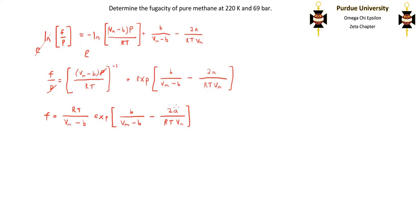a and b are constants of the Van der Waals equation of state given by the following expressions. We can look up the values of the critical temperature and critical pressure in the back of the book for methane.